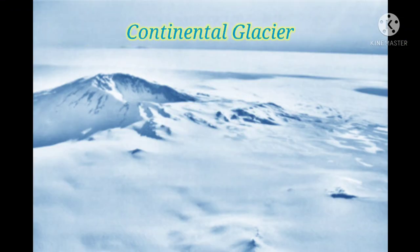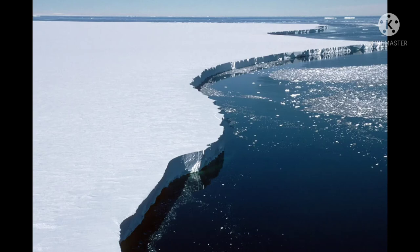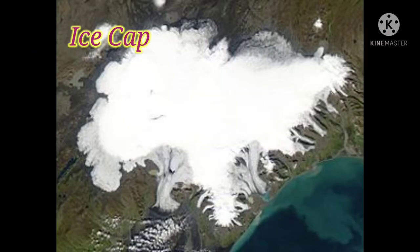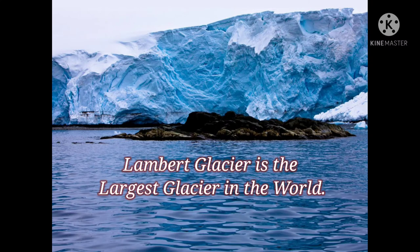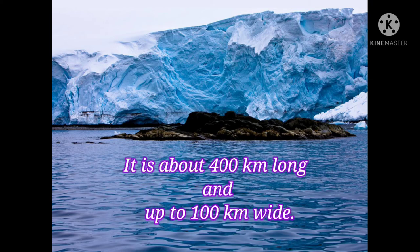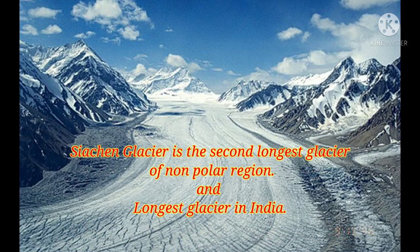Continental glaciers are a blanket-like accumulation of snow and ice which moves outward in all directions from a central area of highest thickness towards the lowest thickness area along the margin. Continental glaciers can also be divided into ice sheet, ice cap, and ice field. Continental glaciers may be found in Antarctica and Greenland. Lambert Glacier in Antarctica is the largest glacier in the world — it is about 400 km long and up to 100 km wide. The Siachen Glacier is the longest glacier in India, at about 76 km long.